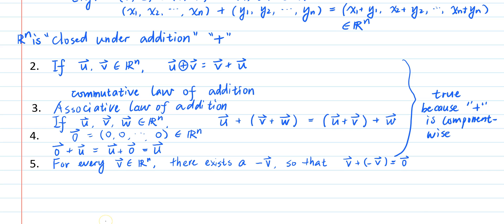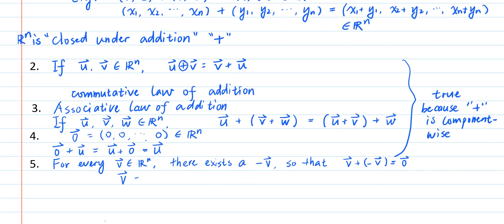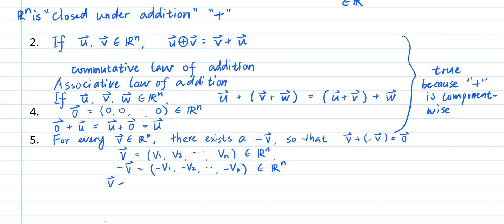This is true because for every n-tuple v1, v2, etc., vn of real numbers, we can always define the negative of the element to be the n-tuple with the negative of all the components of v. And this n-tuple is of course still an element of R^n. And the sum of these two elements of R^n is going to be the zero vector, n-tuple of all zeros.